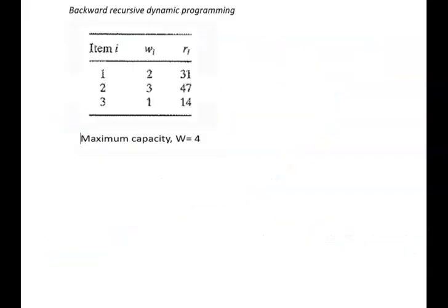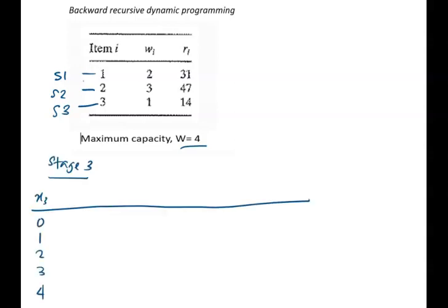Since we have 3 items, there will be 3 stages: item 1 represents stage 1, item 2 represents stage 2, and item 3 represents stage 3. For the state, because our maximum capacity is 4, the state will run from 0 up to 4. For the alternative, we check the maximum capacity divided by the individual weight per item: 4 divided by 1 equals 4, so the alternative runs from 0 up to 4.